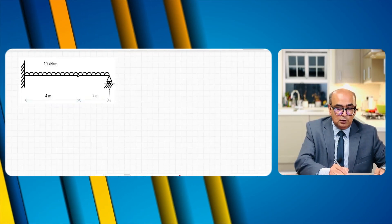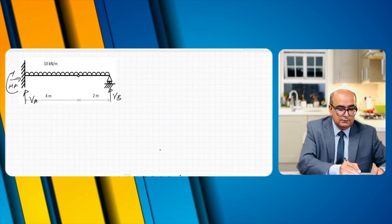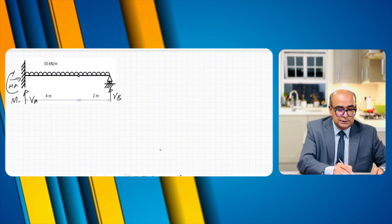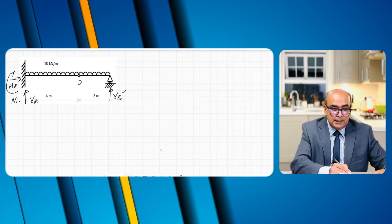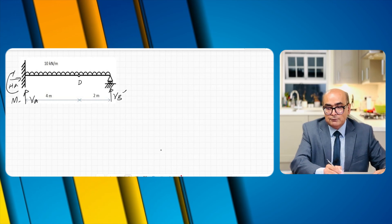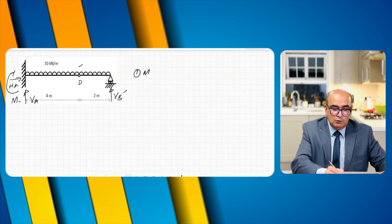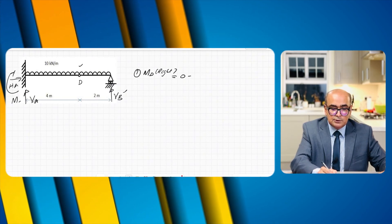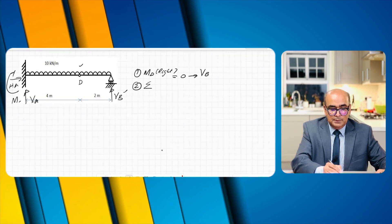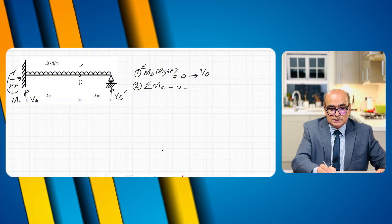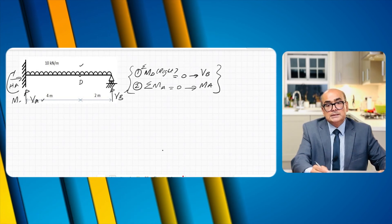In the second method, I label point B as VB, the fixed end reactions as VA, HA, and MA, and the internal pin location as D. The first strategy is to isolate point D and find the moment from the left and right at that point. Summation of moments at D from the right equals zero — this gives VB. Summation of moments at A equals zero — this gives MA.